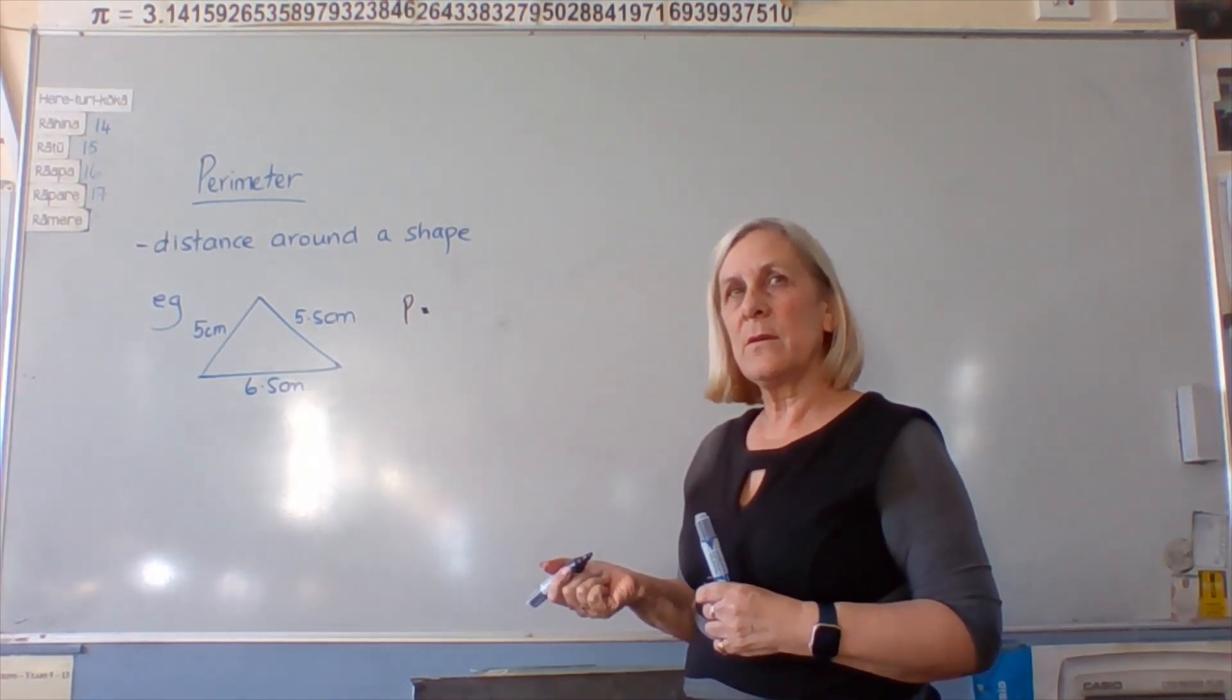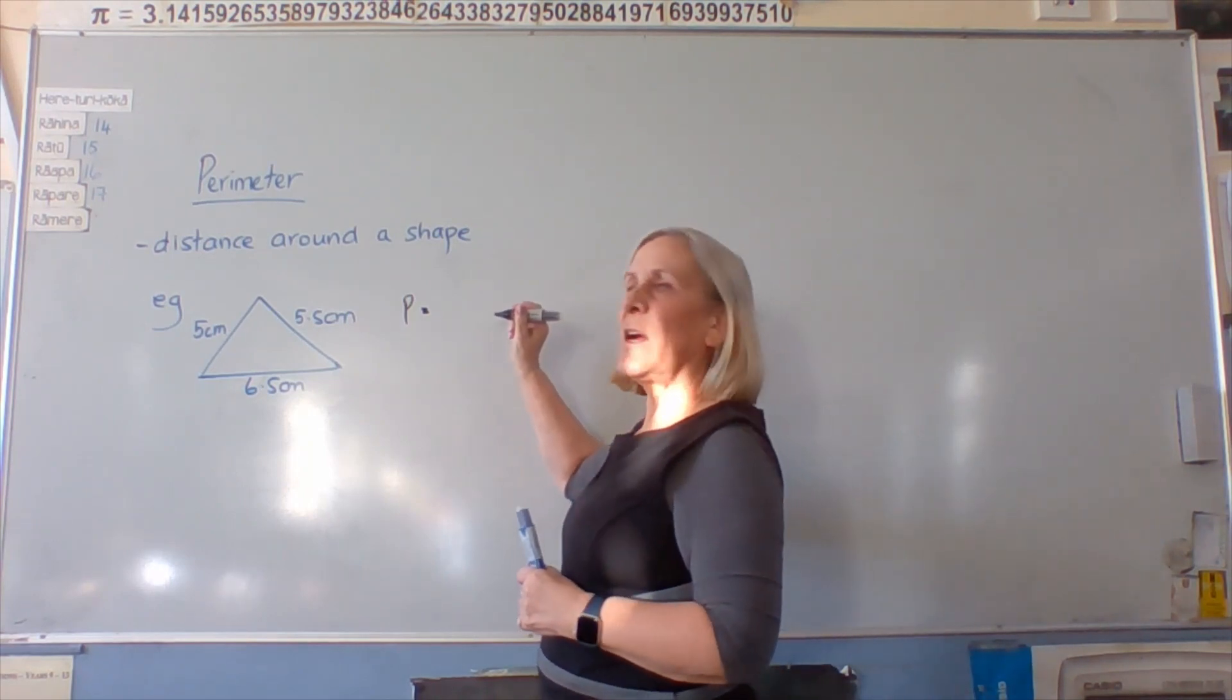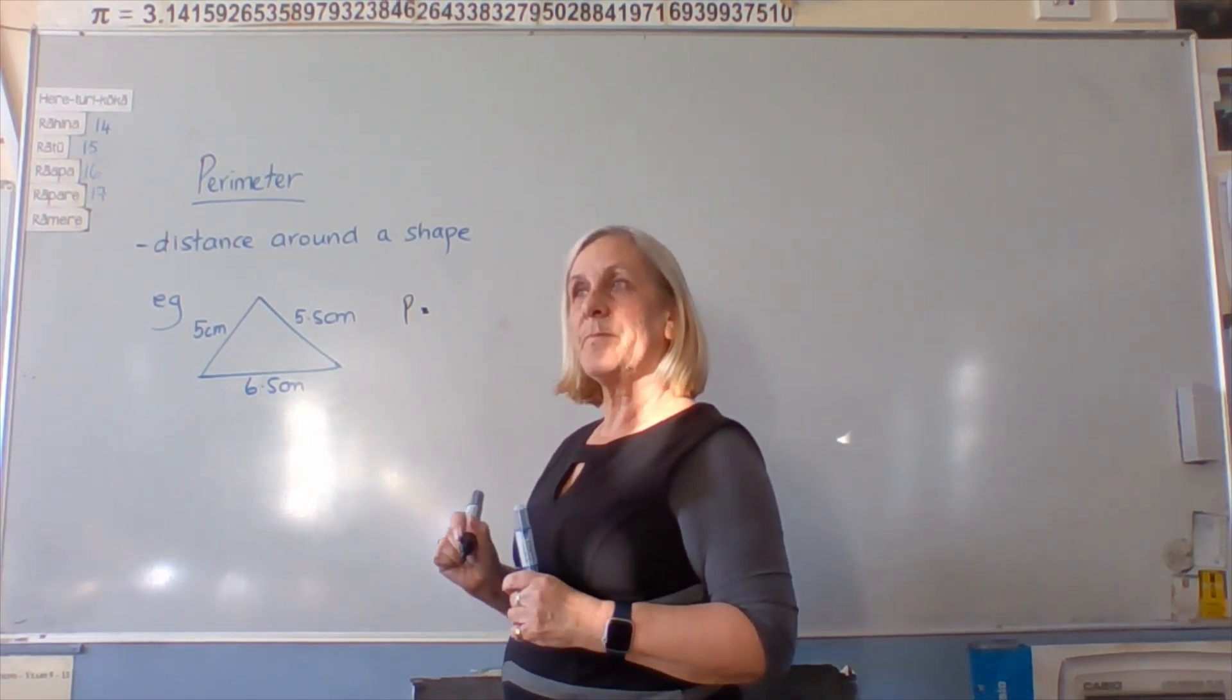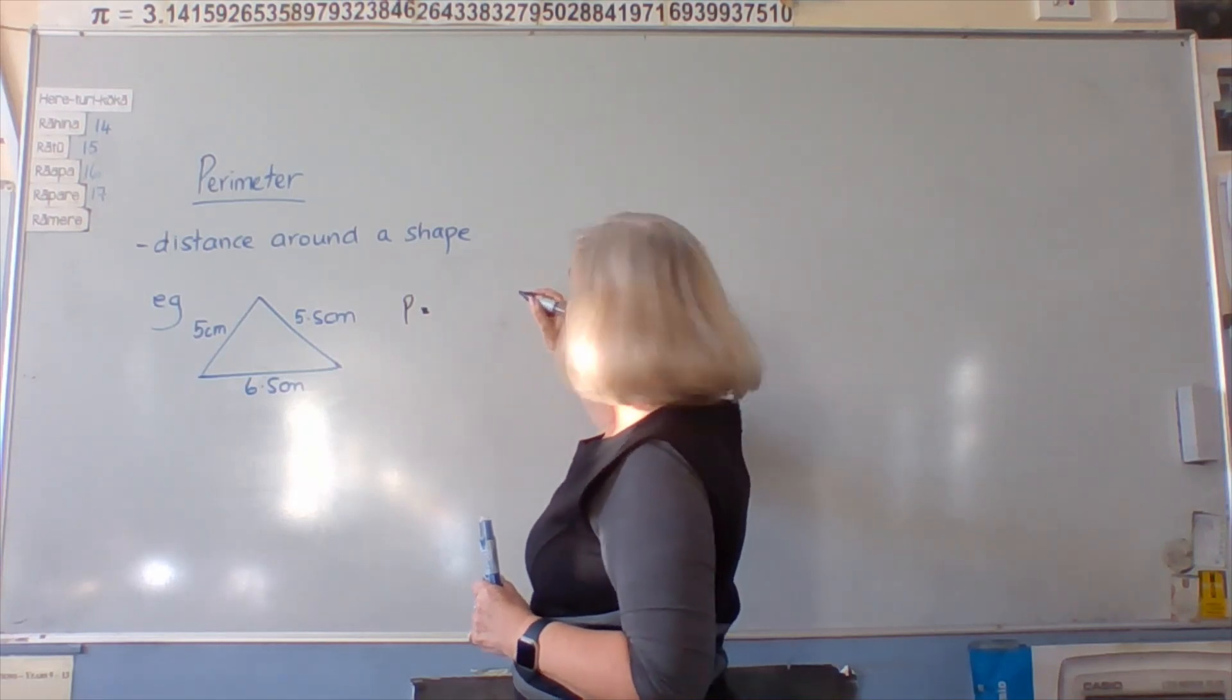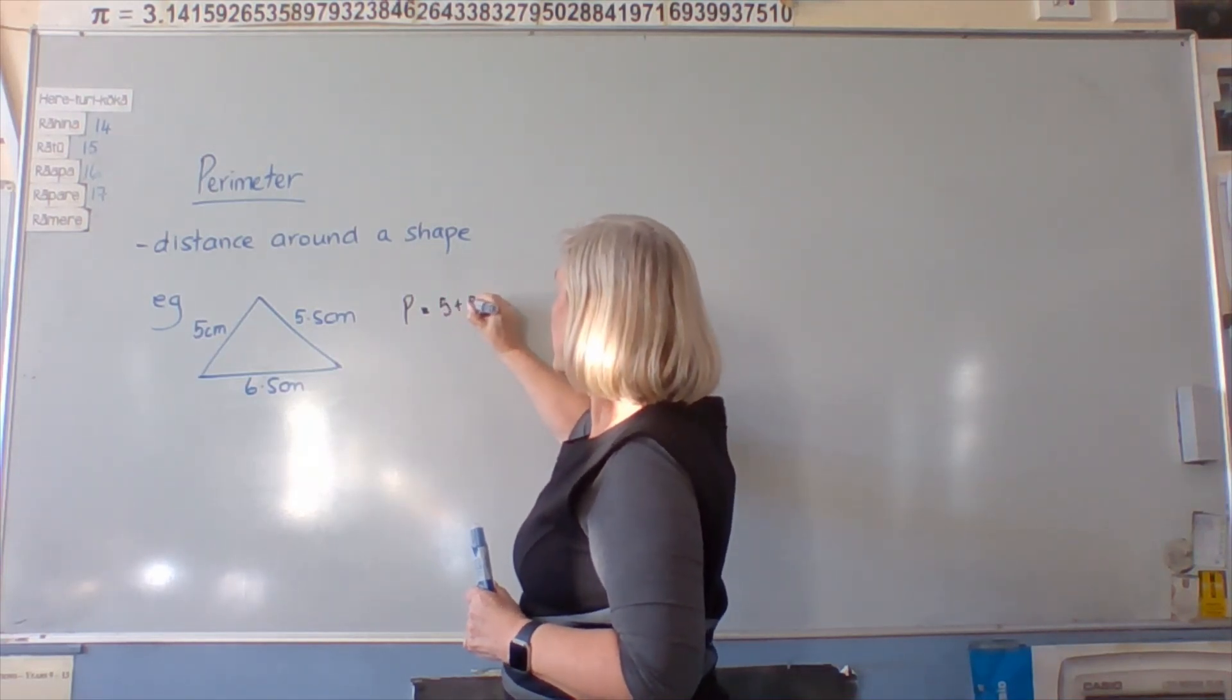What would our working be to find the perimeter of this shape? 5 plus 5.5 plus 6.5. Perfect.